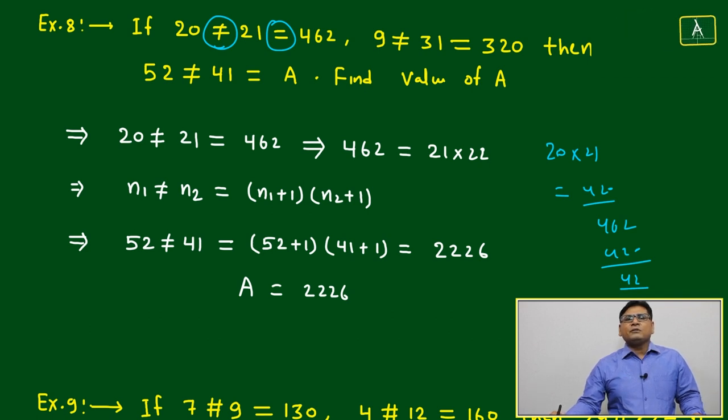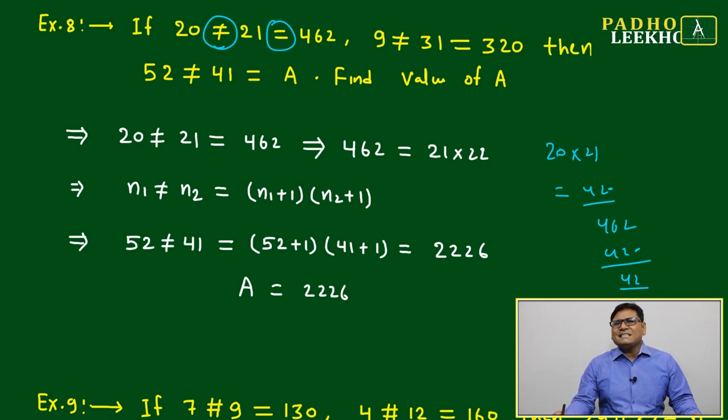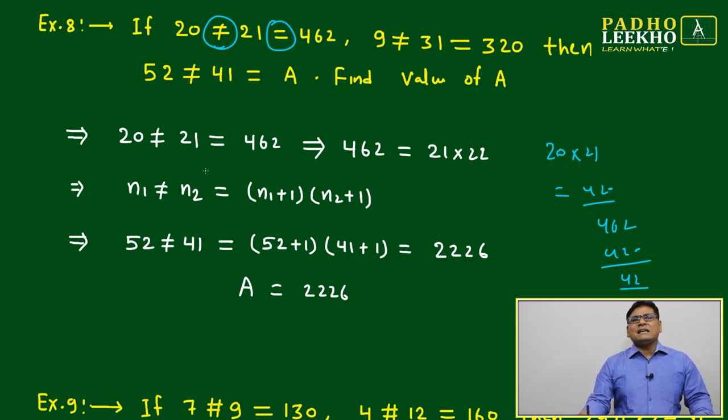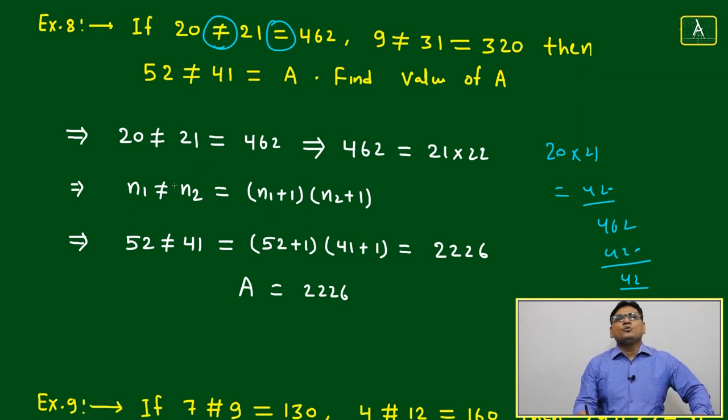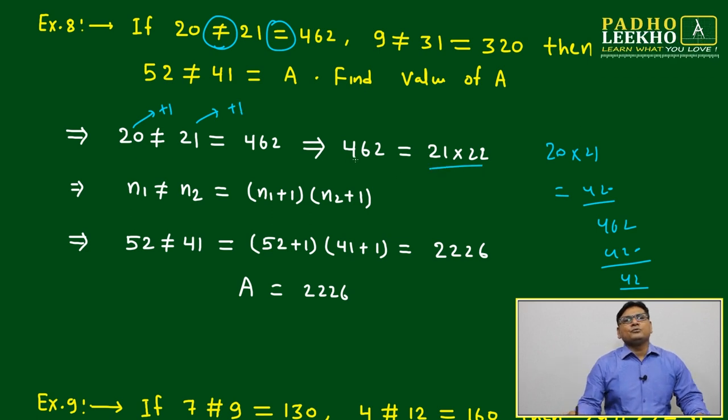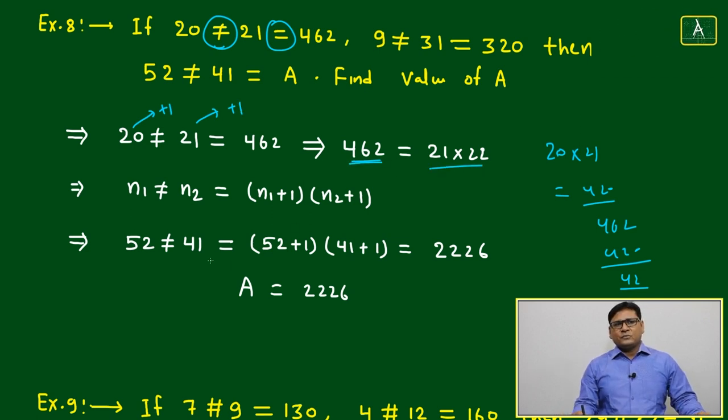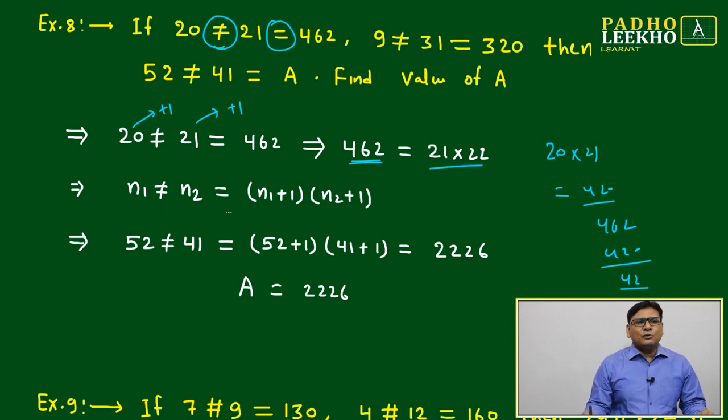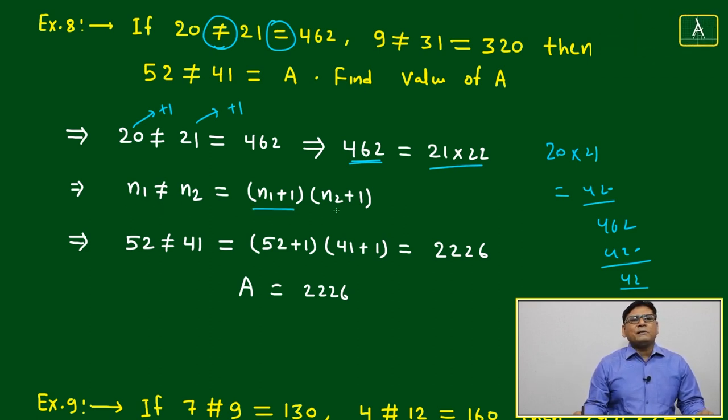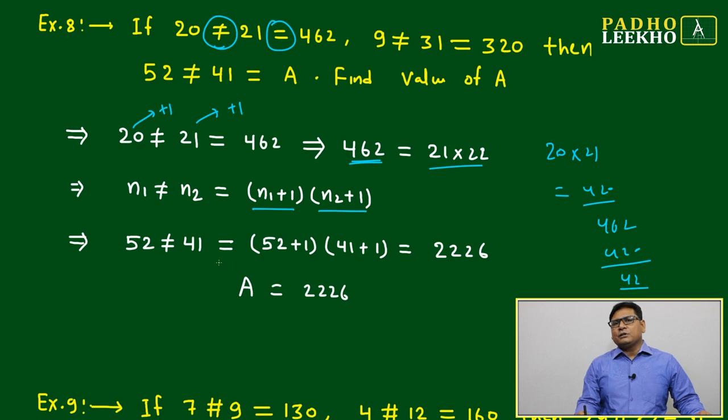42 means 21 plus 21. Shortage is 21 plus 21. Means both sides, if increased by 1 itself, it will be sufficient to reach the number. Means 20 if increased by 1, 21 is increased by 1, it will become 21 into 22, and you will get 462. So n1 is not equal to n2 equals n1 plus 1 multiplied by n2 plus 1.